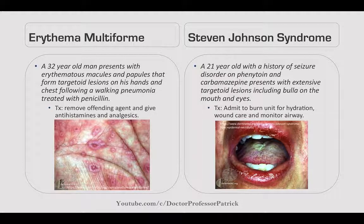Erythema multiforme: a 32-year-old man presents with erythematous macules and papules forming targetoid lesions on his hand and chest following a walking pneumonia, after treatment with penicillin. Treat by removing the offending agent and giving antihistamines and analgesics. It's associated with mycoplasma pneumonia and certain drugs like penicillins.